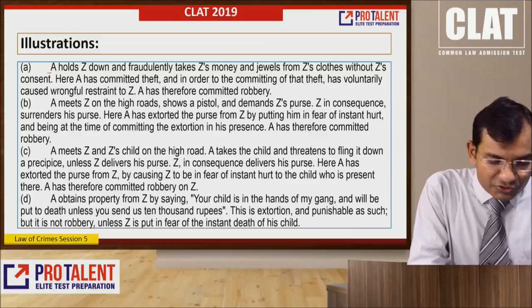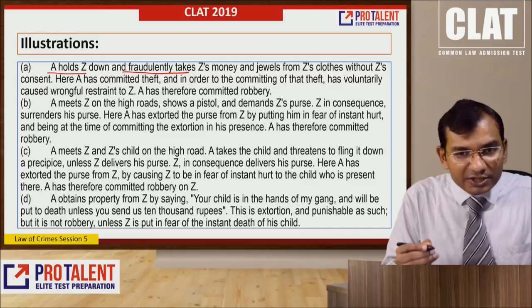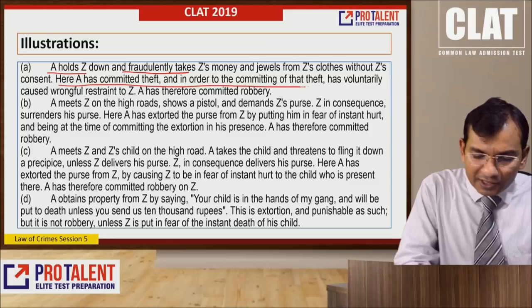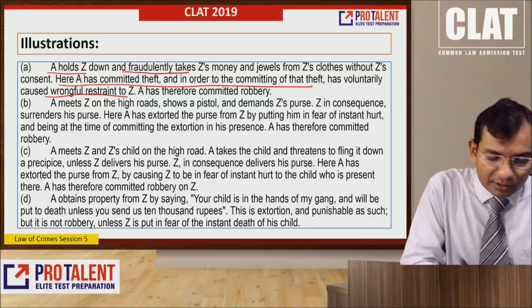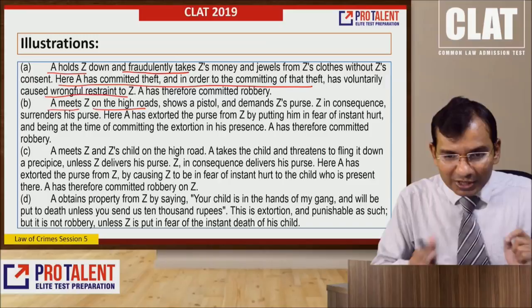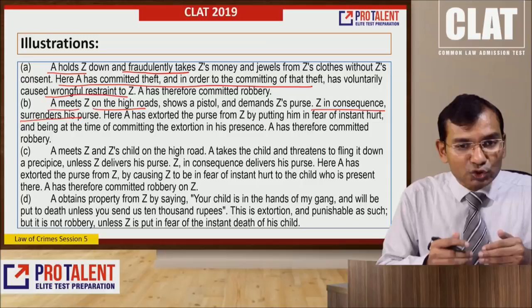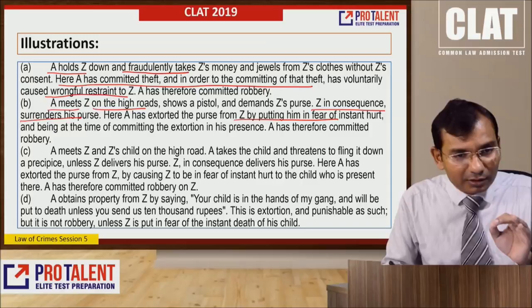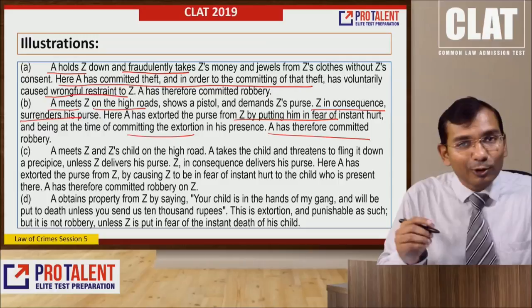Another illustration: A meets Z on the high road, shows a pistol, and demands Z's purse. Z in consequence surrenders his purse. Here A has extorted the purse from Z by putting him in fear of instant hurt and being present at the time of committing the extortion — therefore A has committed robbery. The remaining illustrations are left for you to read on your own. When practising legal reasoning, it is very crucial to read the language yourself in English and interpret it yourself.